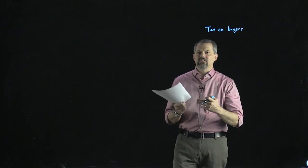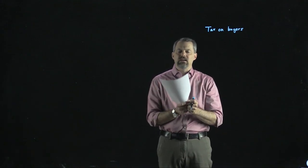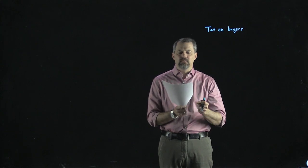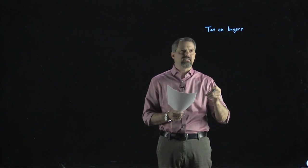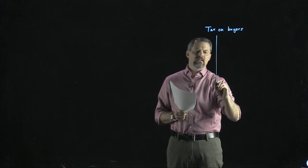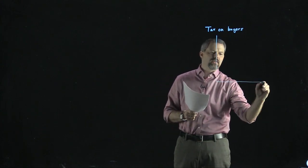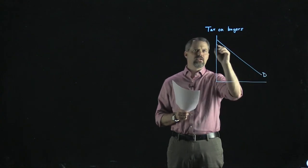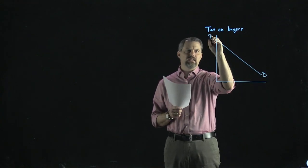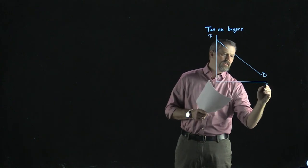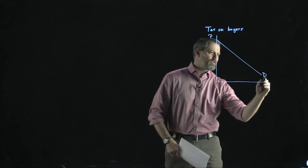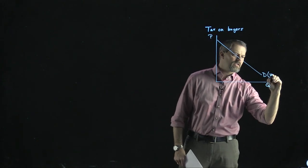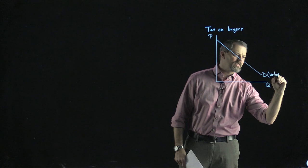A tax on buyers decreases a buyer's willingness to pay for the good by the amount of the tax. If we think about the demand curve that consumers have, the demand curve represents willingness to pay — it represents the value that consumers place on the good.